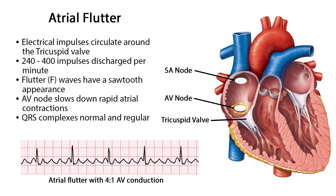Now we'll take a look at atrial flutter. Atrial flutter occurs when the electrical impulses of the heart take an abnormal path through the atria, usually circulating around the tricuspid valve in the right atrium. The atria discharge between 240 to 400 regular impulses every minute. These atrial contractions produce flutter, or F waves, that have a sawtooth appearance. With such rapid atrial contractions, the AV node slows them down, often with every second or third contraction reaching the ventricle. The ventricles often respond at a regular rate, so the QRS complexes are usually normal and regular. The number of F waves to QRS complexes is expressed as a ratio — for example, an atrial rate of 280 and a ventricular rate of 70 is referred to as 4-to-1 AV conduction. Atrial flutter usually indicates underlying disease and may show symptoms of palpitations, shortness of breath, anxiety, or weakness.